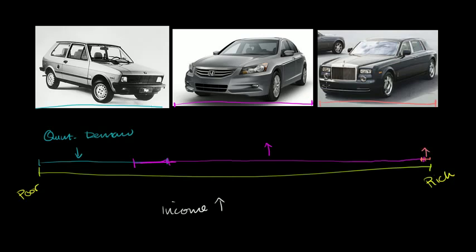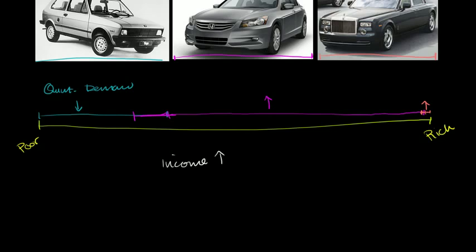And that was at a particular price point, but assuming that this is the most expensive, this is the middle, and this is the cheapest, this would be true at probably any price point. And so we have this phenomenon that when income went up, the quantity demanded at multiple price points for this car. So let me draw its actual demand curve. So this car right over here, this is price, this over here is demand. If its old demand curve looks something like this...